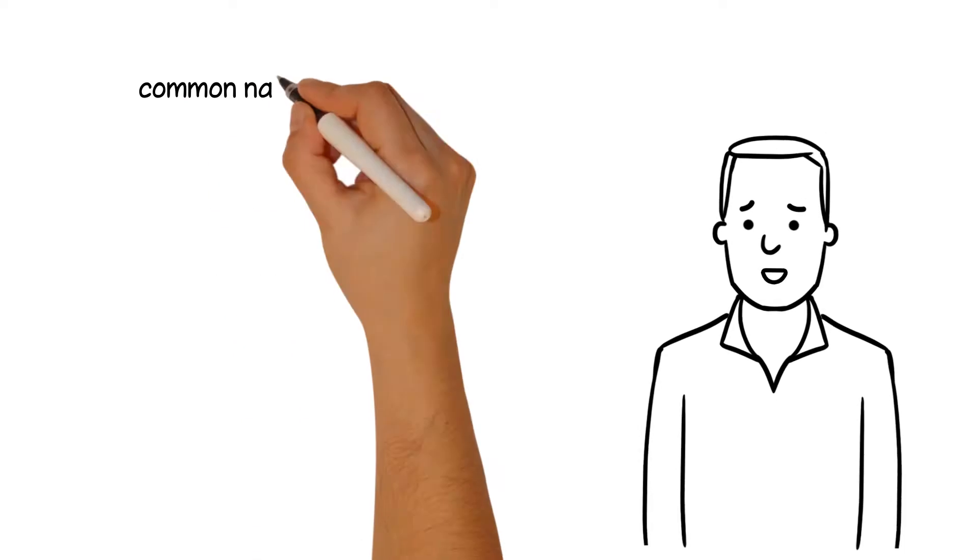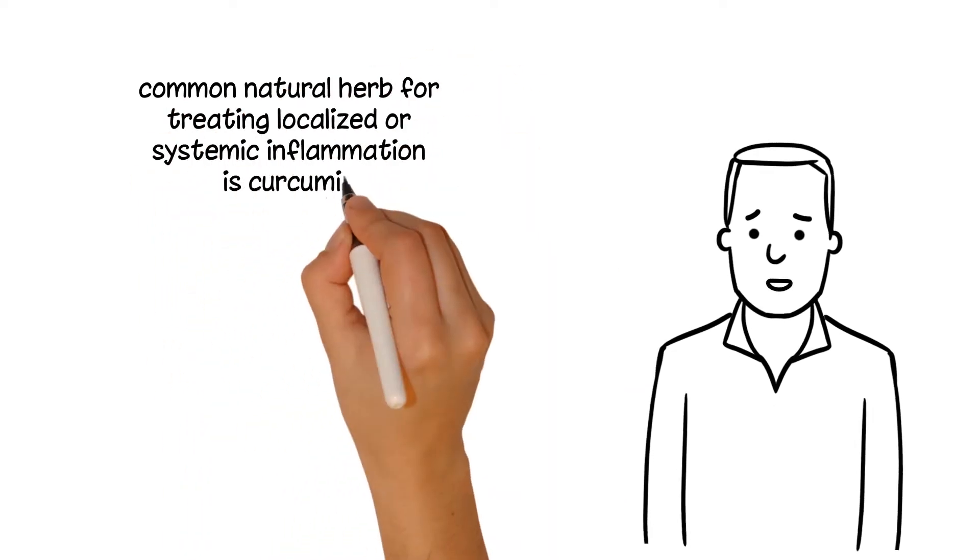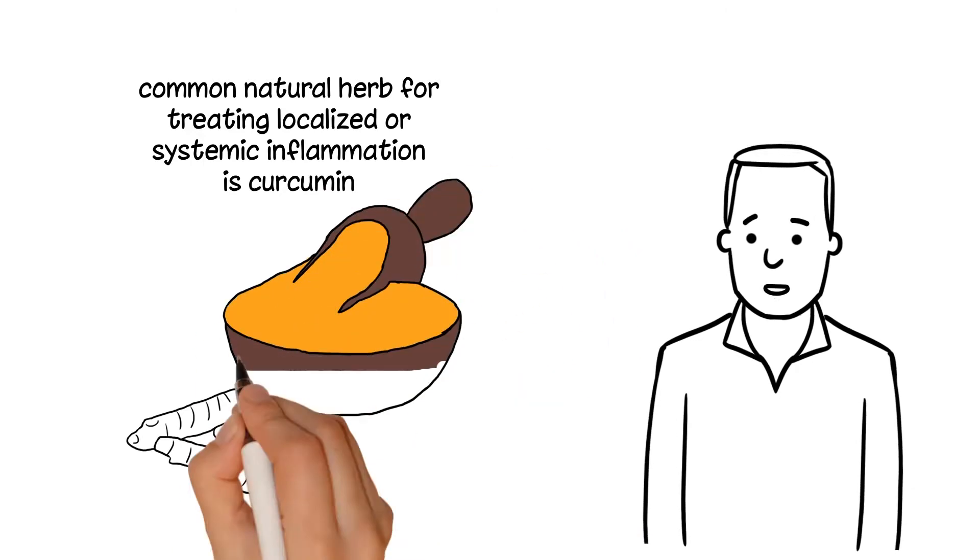One of the most common natural herbs for treating localized or systemic inflammation is curcumin, which is present in many medications.